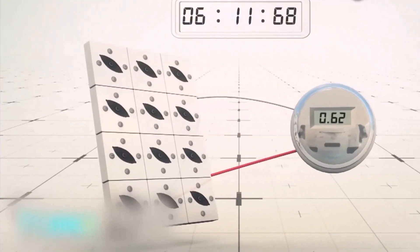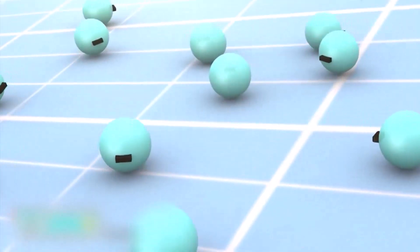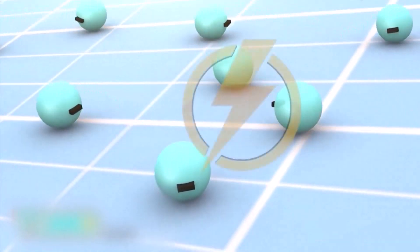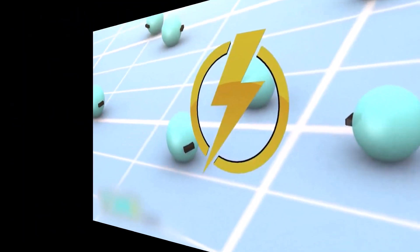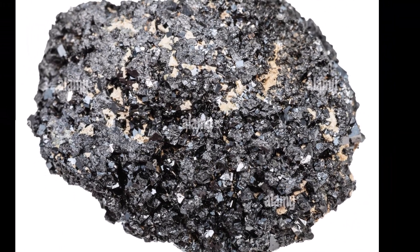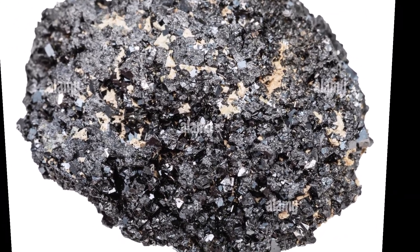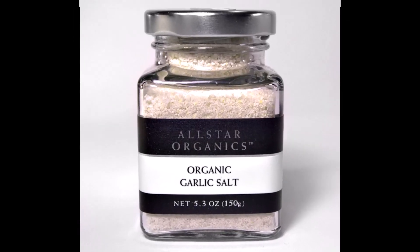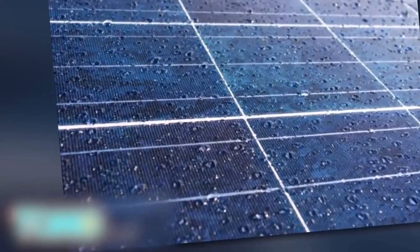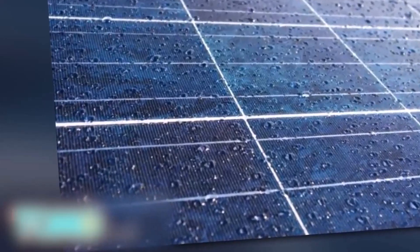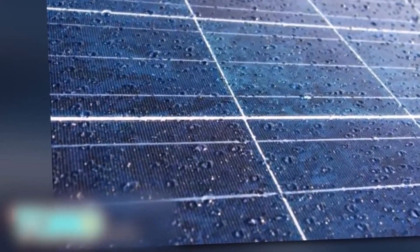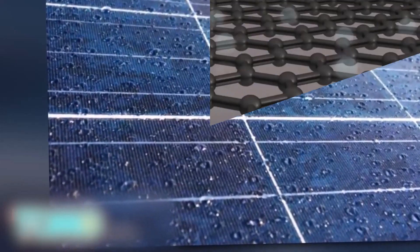Solar panels with quantum dots could be 11% more efficient than the ones we use now. Perovskite solar paint, which is also called spray-on solar cells, is made from the mineral calcium titanium oxide, or from organic salts. These solar cells can be made in a liquid form, which makes them even easier to use as paint.